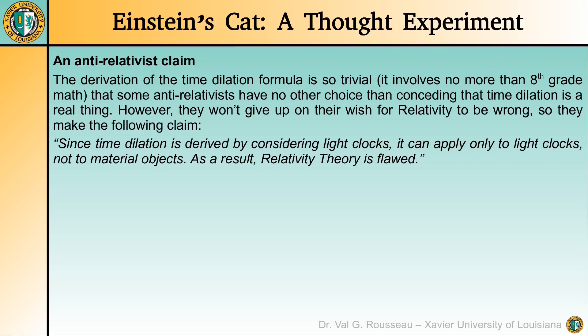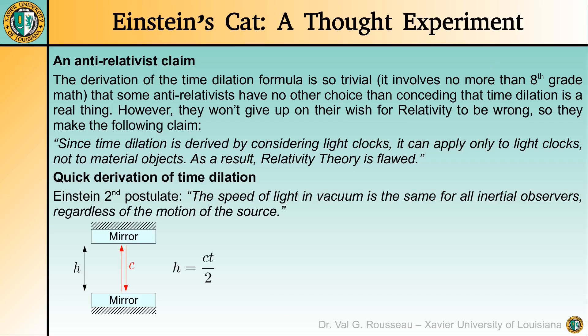Before we prove them wrong, let us quickly derive again the time dilation formula. Here, we will in particular make use of Einstein's second postulate which states that the speed of light in vacuum is the same for all inertial observers. Although non-intuitive, this postulate has never been faulted by any experiment. In other words, we have never seen light going slower or faster than the speed of light in vacuum. Thus, this is a well-established fact.